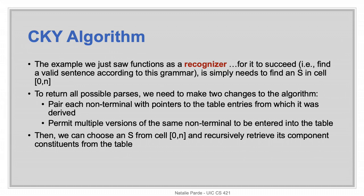We made it all the way through our CKY case example. In the example we just worked with, we were focusing on recognizing whether the sentence fit into the specified grammar, so all we really wanted was to know whether S was in the top right cell. If we instead wanted to return all of the possible parses, we'd make two changes: first, we'd add back pointers, just like in other dynamic programming algorithms, so we could see from where each non-terminal was derived. Then we'd also permit multiple versions of the same non-terminal to be entered into the table for cases when it was reached in multiple different ways. We could then recursively retrieve the component constituents from the table.